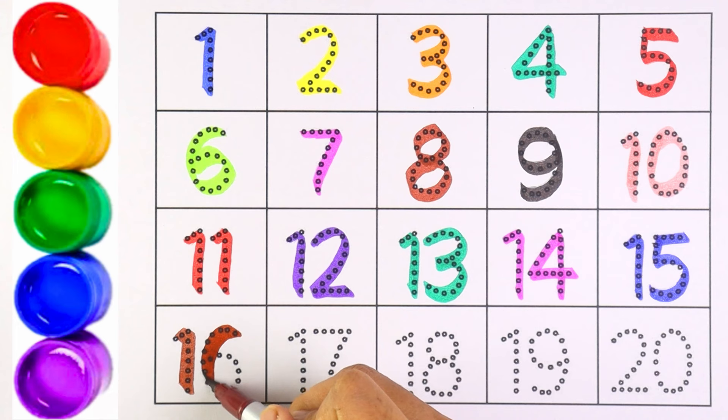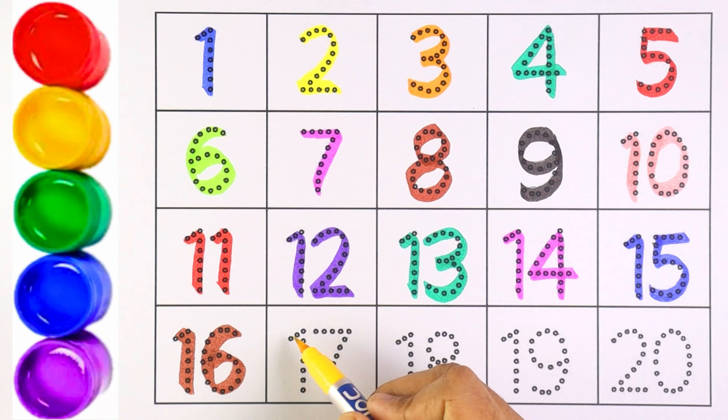Brown color for number 16. Number 16. Yellow color for number 17. 1 and 7, number 17.